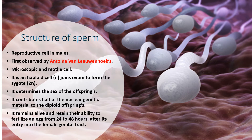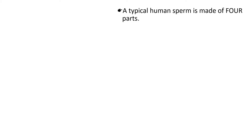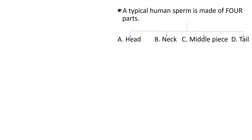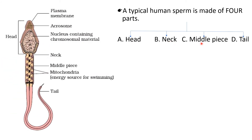If the sperms meet the ovum within that 24 to 48 hour period, fertilization will take place and a zygote is formed. A typical human sperm is made of four parts: the head part, the neck part, the middle piece or body part, and the tail part.